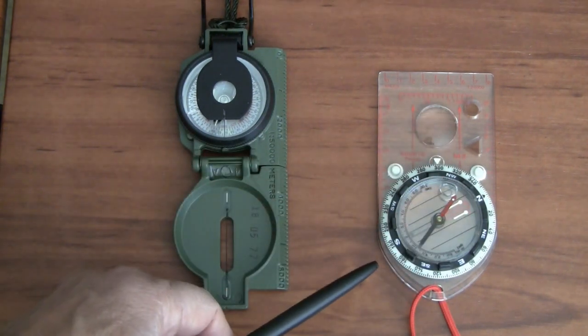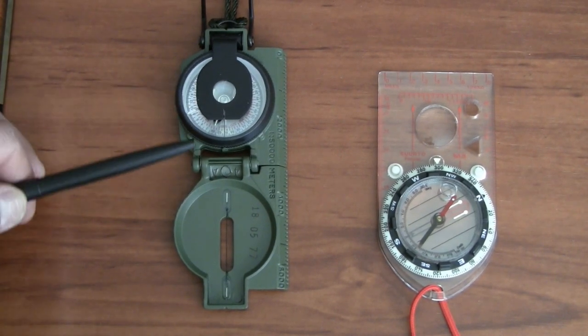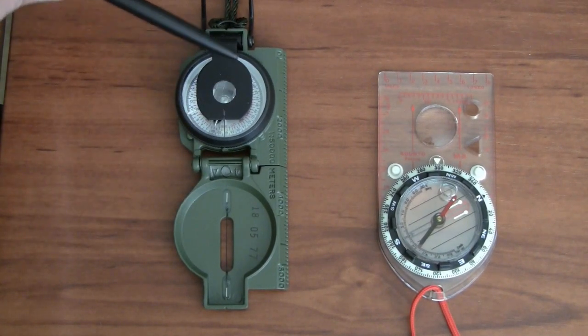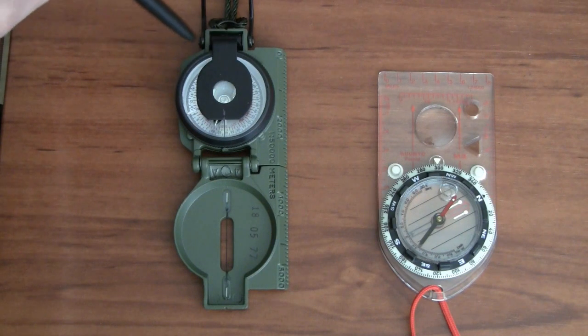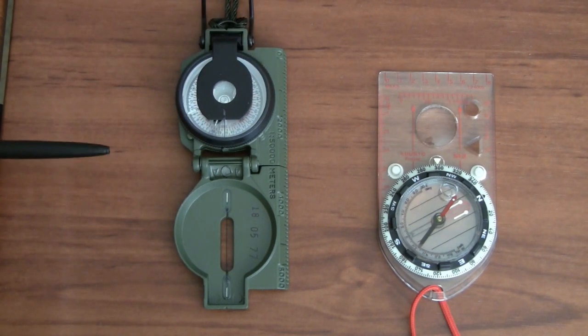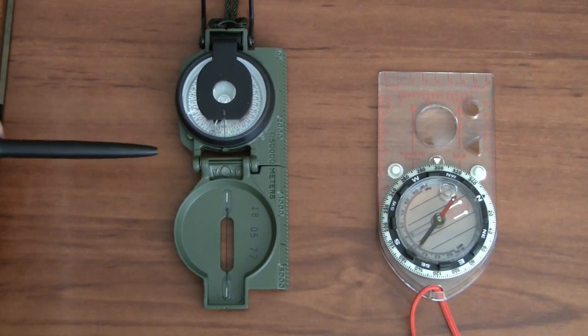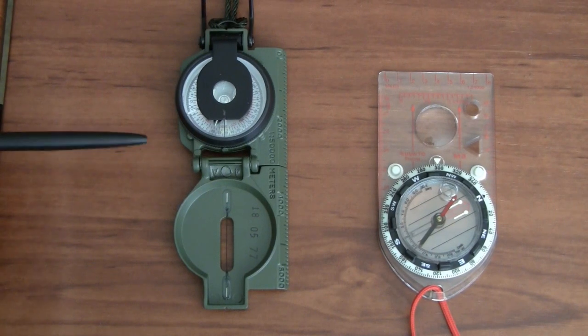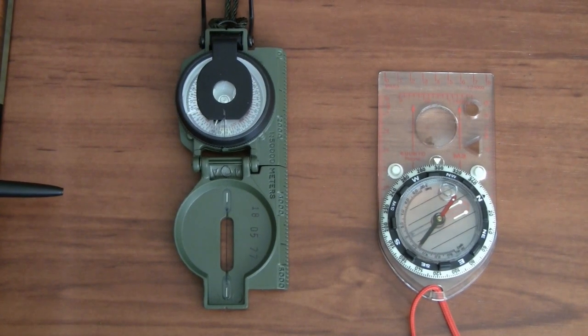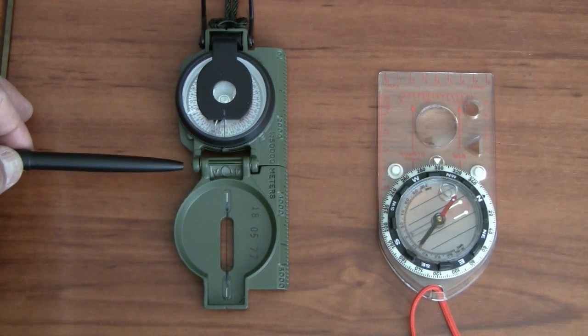The other type is the lensatic. Lensatic because it has a lens and it has a fold-up portion here that you look through and sight through and sight down through the lens onto the compass rose. This particular model is what's issued to every soldier, sailor, marine, airman, and Coastie in the US military and NATO. This particular type I had when I was in the army back in 1960 late something or other. I'm not going to give you all of that. But this thing is absolutely indestructible.